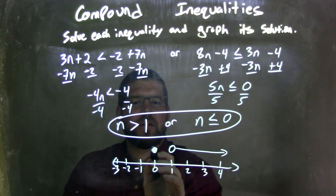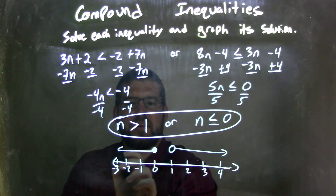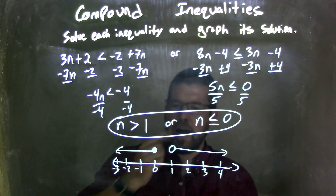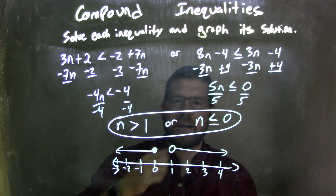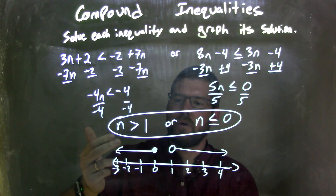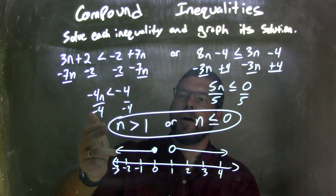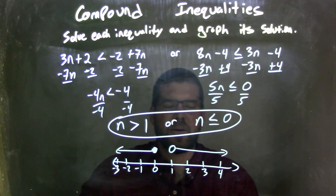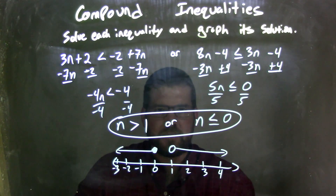And I put my arrow to the left, because n is also less than 0. So now we have our graph that matches our inequalities, where n is greater than 1, or n is less than or equal to 0.